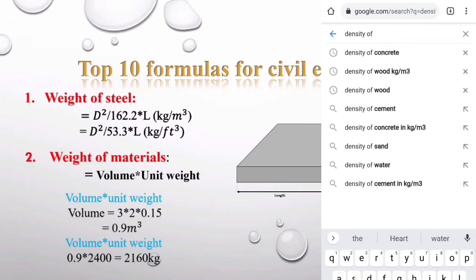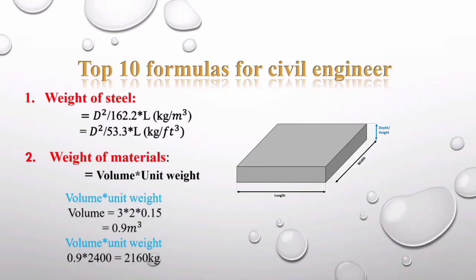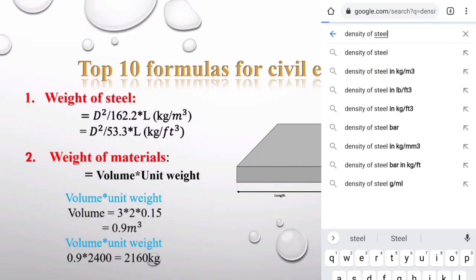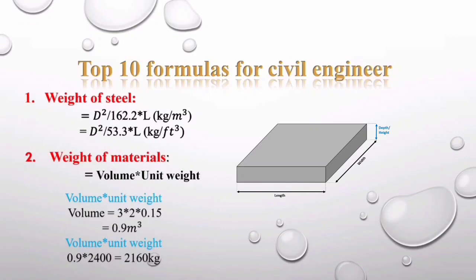Similarly, when you want to find the weight of soil, find its volume first, then search for the density of soil. If you want to find the weight of a steel bar, find its volume using (π/4) × d squared × length for a circular bar, then multiply by the density or unit weight to get the weight in kg or pounds.